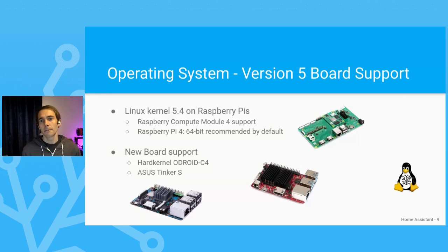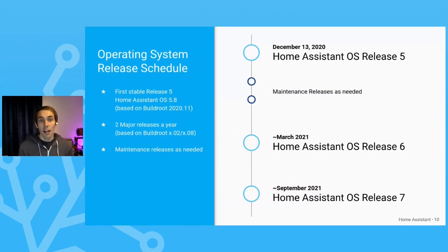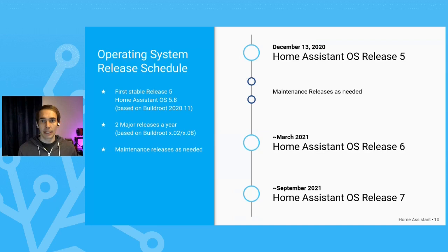For the Raspberry Pis, we moved to the Linux kernel 5.4, just like the latest release of Raspberry Pi OS. We also updated U-Boot 202010. With this, we can support Raspberry Pi 4 with 8 GB of memory as well as the Compute Module 4. We recommend the 64-bit image for Raspberry Pi 4 from Release 5 onwards. There is now Odroid C4 support — a very cost-effective alternative to Raspberry Pi 4 in a similar form factor. We also added ASUS TinkerBoard S support, a variant with fast onboard eMMC storage. Today, we release version 5.8, the first stable version of Release 5, based on Buildroot 2020.11.